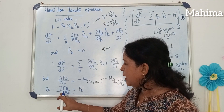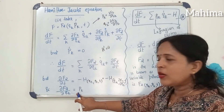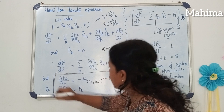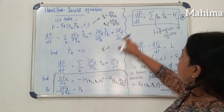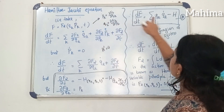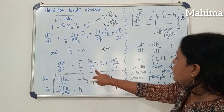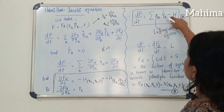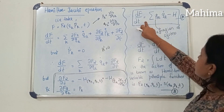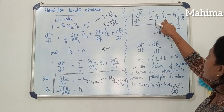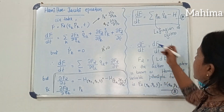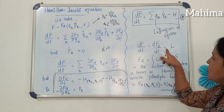We also have del F2 by del qk is equal to pk. Taking these two equations as important, df by dt becomes: substituting del F2 by del qk as pk, we get the summation of pk times qk dot minus H. This is the Lagrangian of the system. Therefore df by dt equals dF2 by dt, which is equal to the Lagrangian of the system.